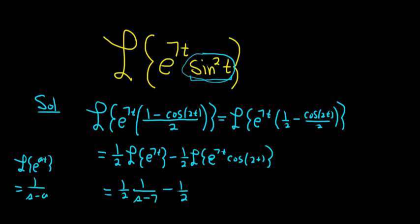And then here we can use the first translation theorem. So we can drop the e, and whenever you drop an e, what you can do is you can replace it with a shift. So we dropped e to the 7t, so the shift takes s to s minus 7.